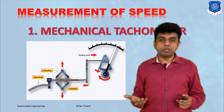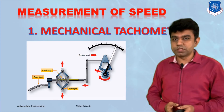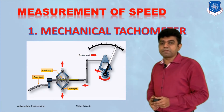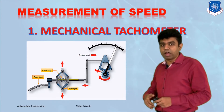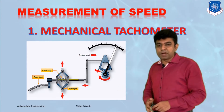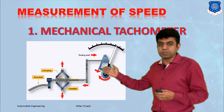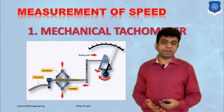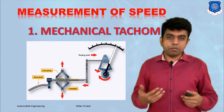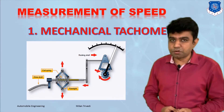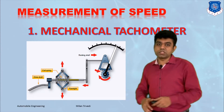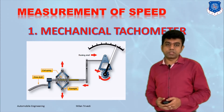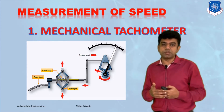This is how the mechanical speed value is measured with a mechanical tachometer. However, the problem is that it requires proper calibration, and there is always wear and tear between the mating parts, which can significantly affect the result. So nowadays we are not using mechanical tachometers; instead, non-contact type tachometers are used, which give speed values from a distance.